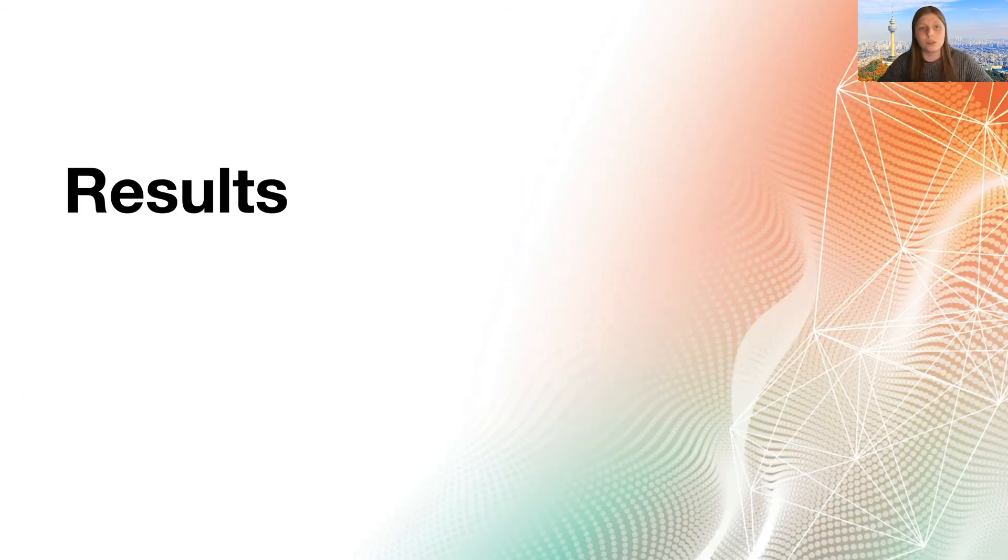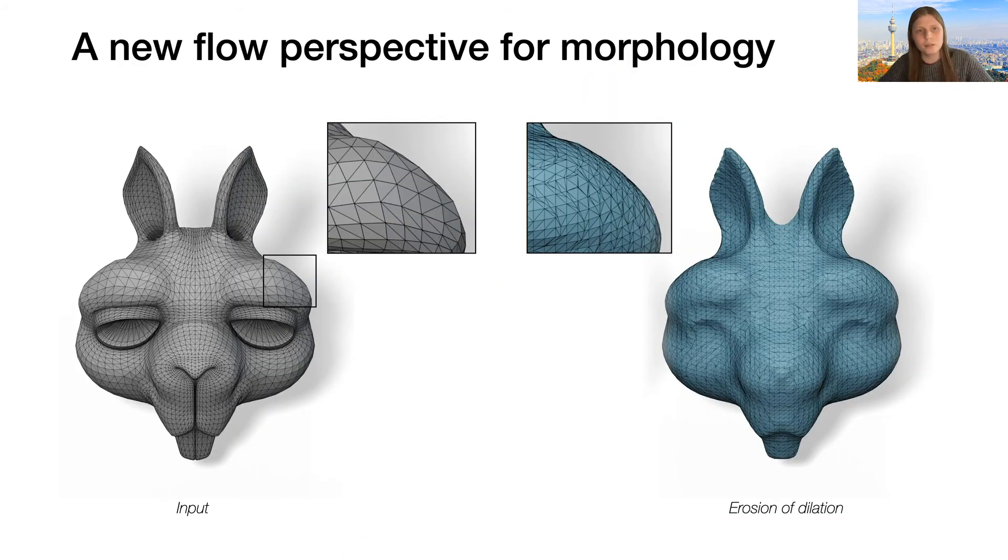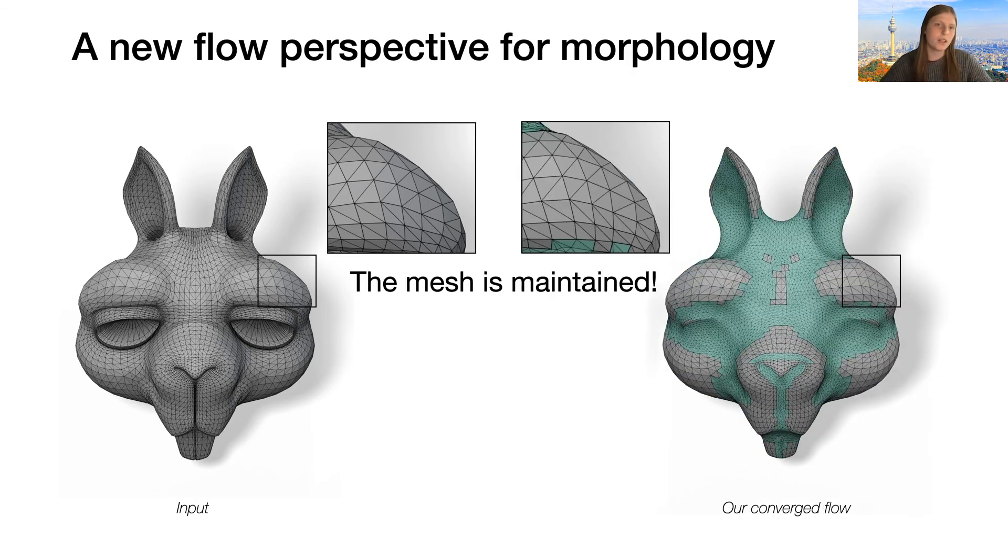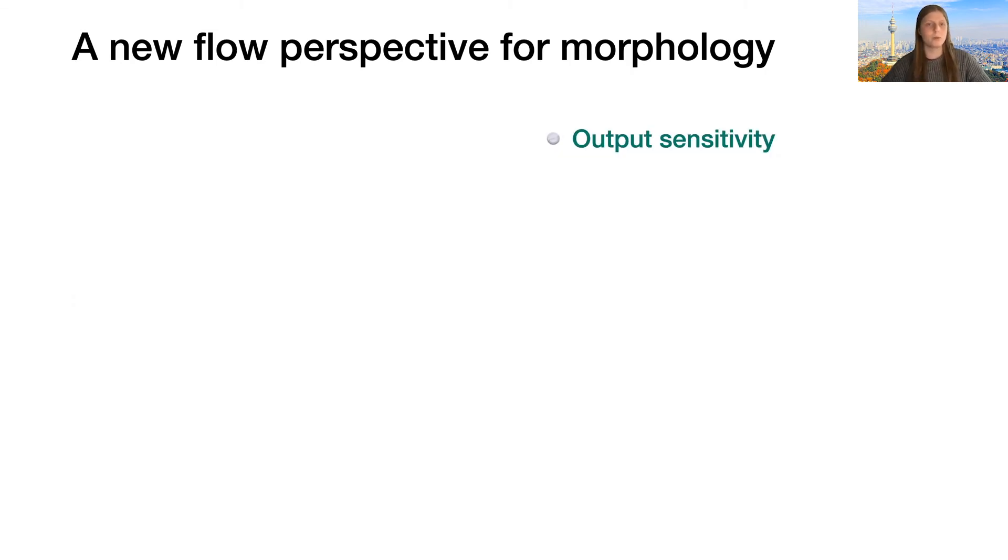Now let's take a look at some results that illustrate the many positive aspects of our method. Let's begin by the major drawback of existing methods that we saw before. If you remember, regions whose surface geometry didn't change with the closing still had a completely different mesh. The first big benefit of our novel curvature-based flow perspective for these operations is that we trivially maintain the mesh in these regions. In our paper, we refer to this as output sensitivity, and it is not only a theoretically important result, it is also important for performance.